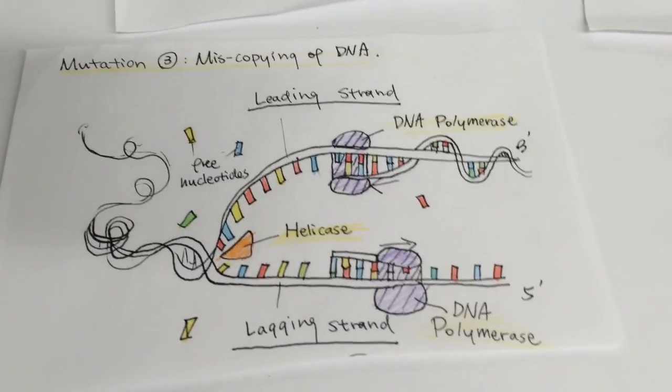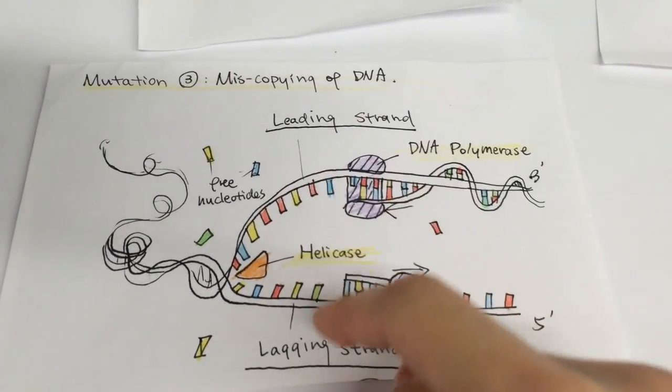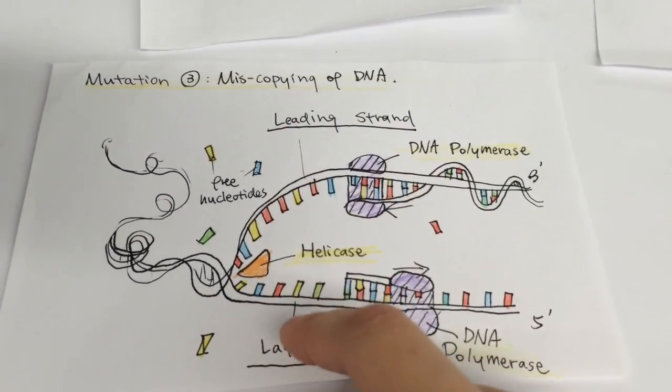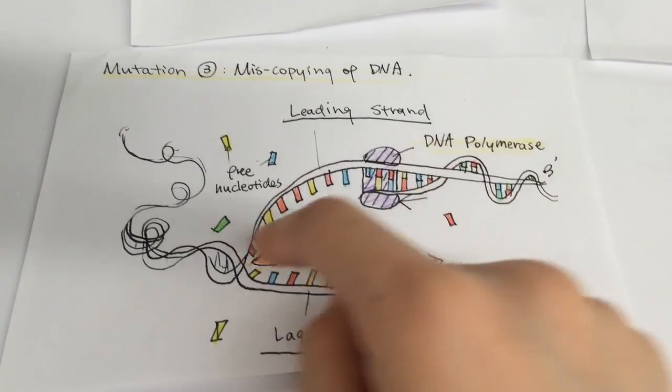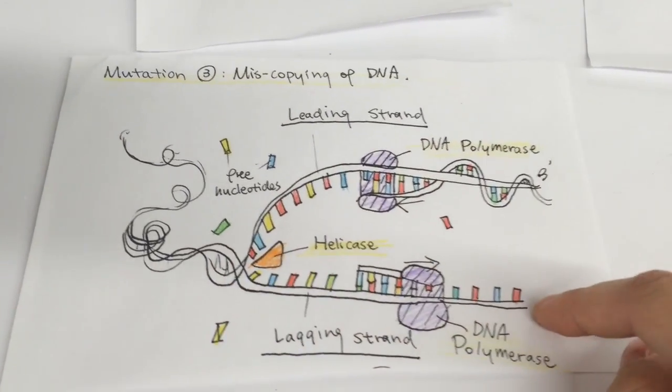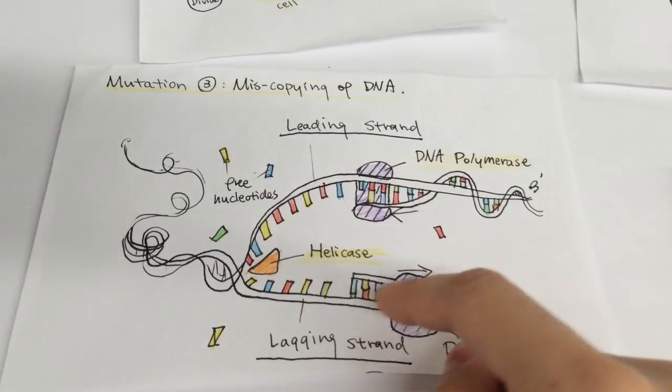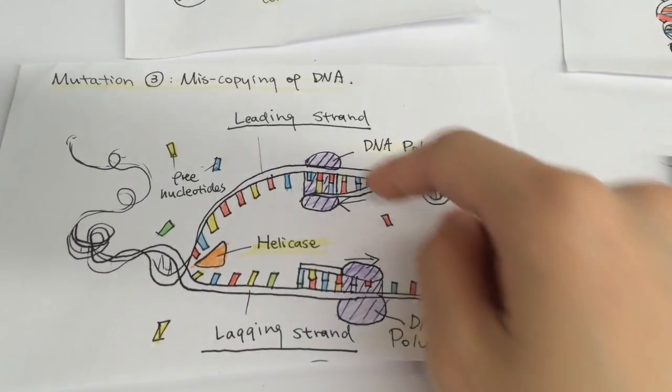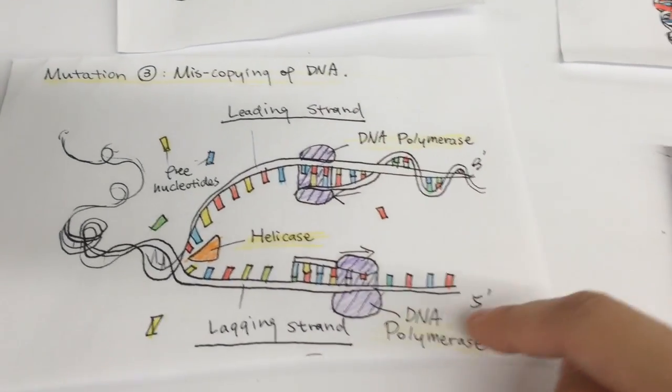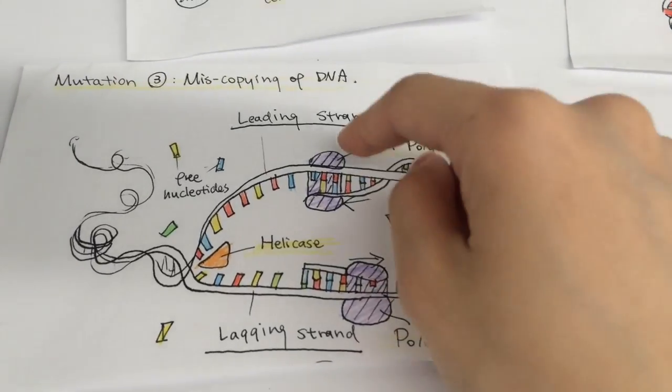As the hydrogen bonds between the nucleotide bases are broken, the DNA is separated into two strands. Although produced in slightly different ways, both strands rely on the enzyme DNA polymerase to synthesize a new strand that matches each of the two strands.